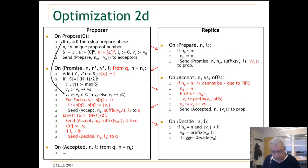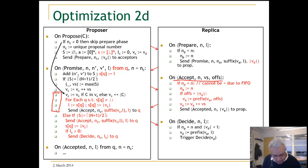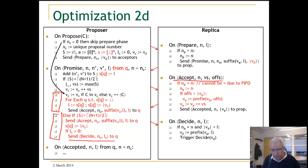Here we have all the optimizations done. In the accept message we distinguish between two cases: acceptors before a majority is reached, and acceptors after a majority is reached — in the latter case we also have to send a decide message. This finishes the accept message optimization.